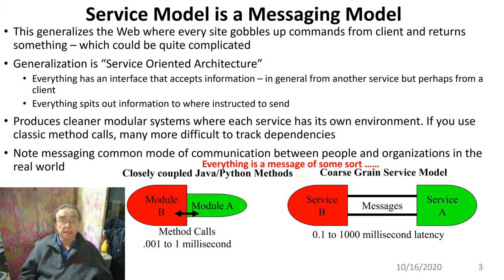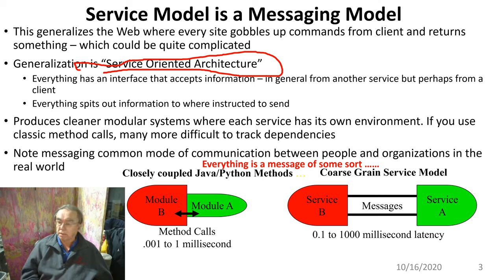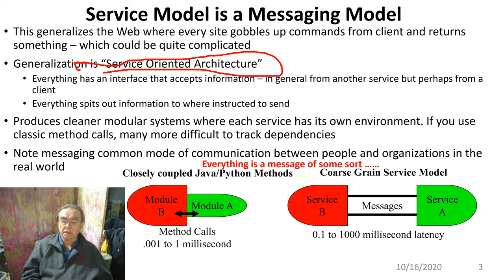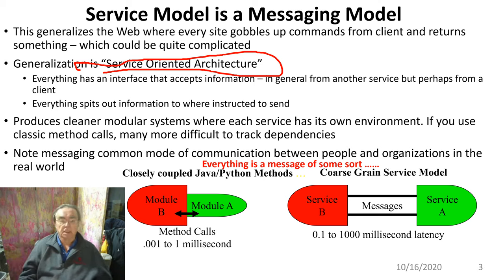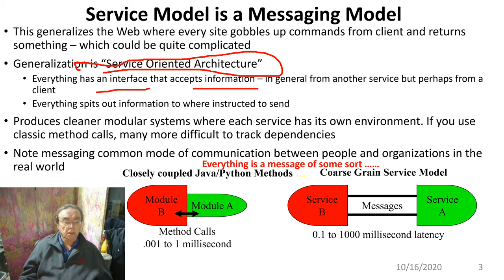This slide is trying to make the stuff about services and messaging clearer, and what a service-oriented architecture is. The web implemented a natural messaging model, but that's consumer-to-server messaging. Service-oriented architectures also involve server-to-server messaging — machine-to-machine messaging. Everything has an interface that accepts information from another service, server, or client, and everything spits out information as messages.